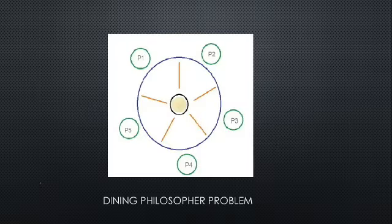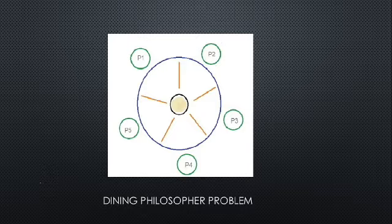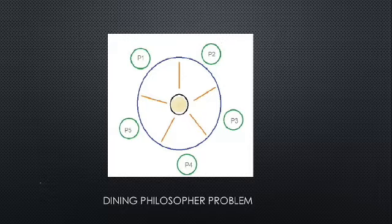At any instant, a philosopher is either eating or thinking. When a philosopher wants to eat, he uses two chopsticks — one from their left and one from their right. When a philosopher wants to think, he puts down both chopsticks at their original place.